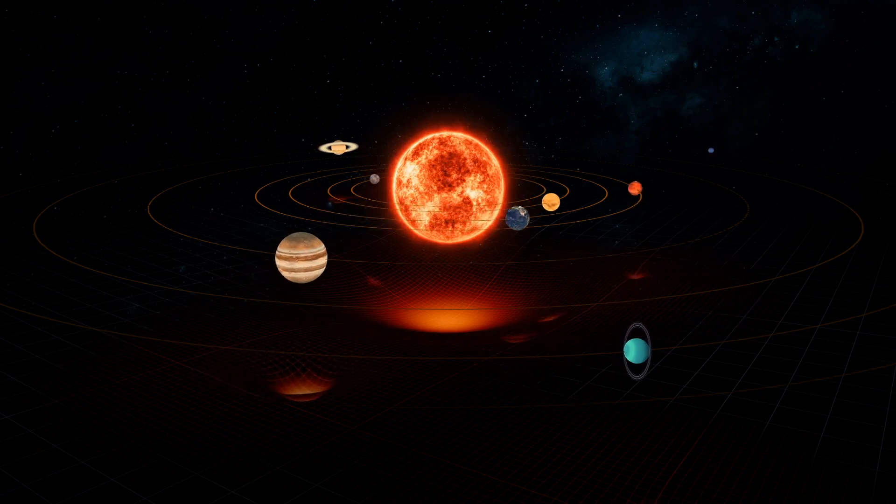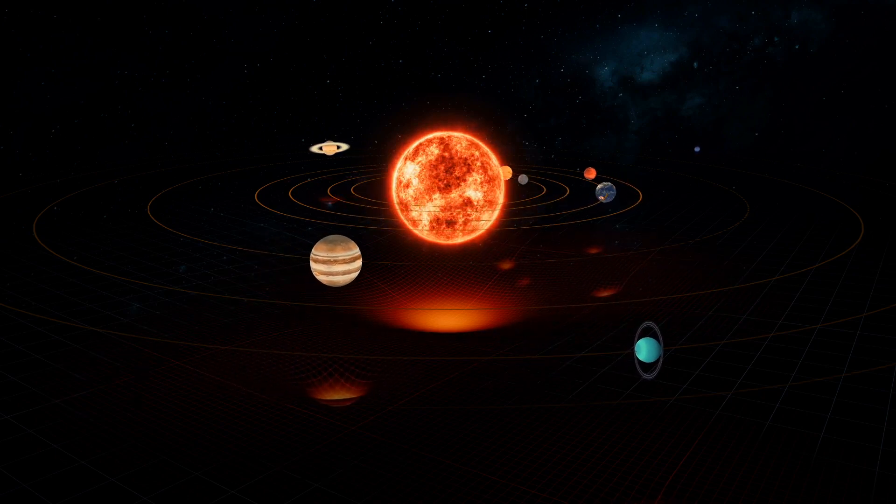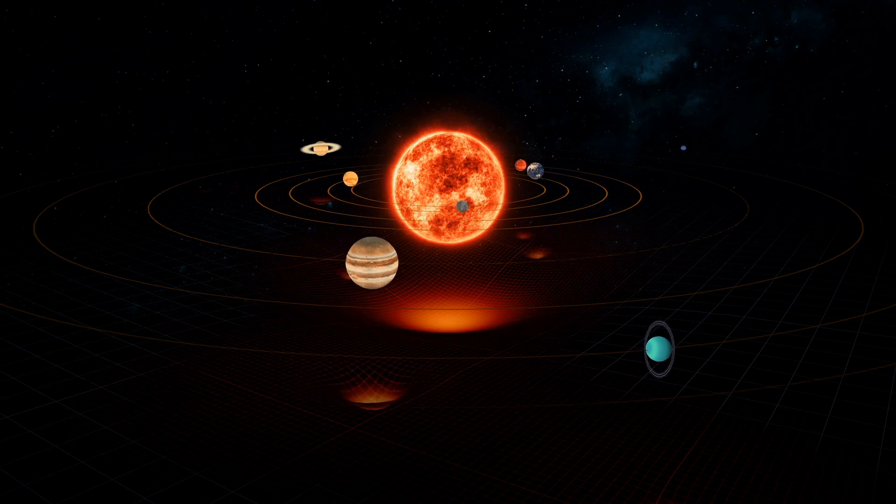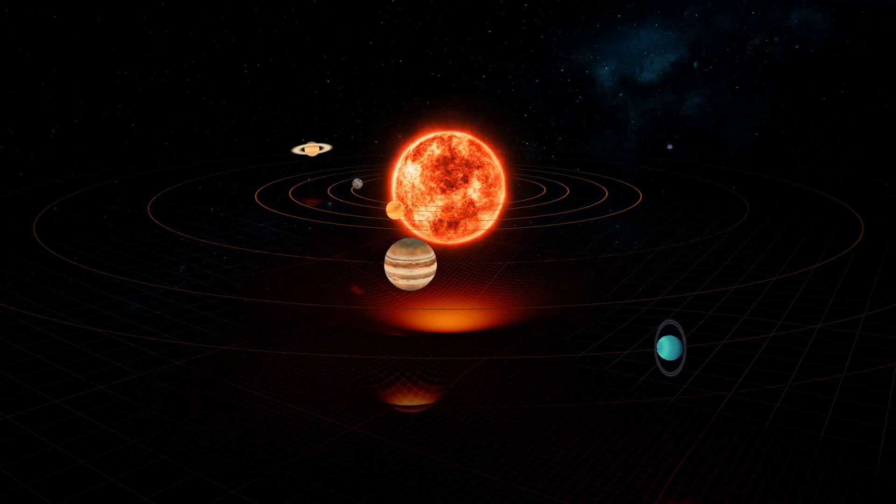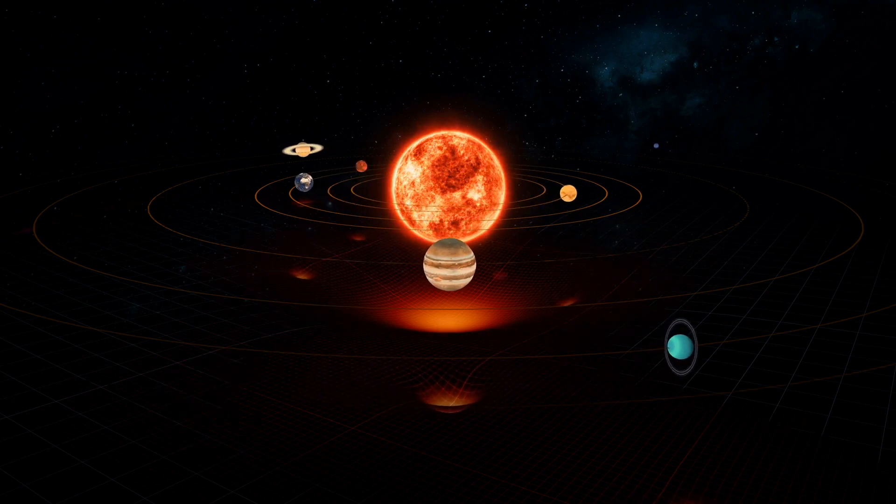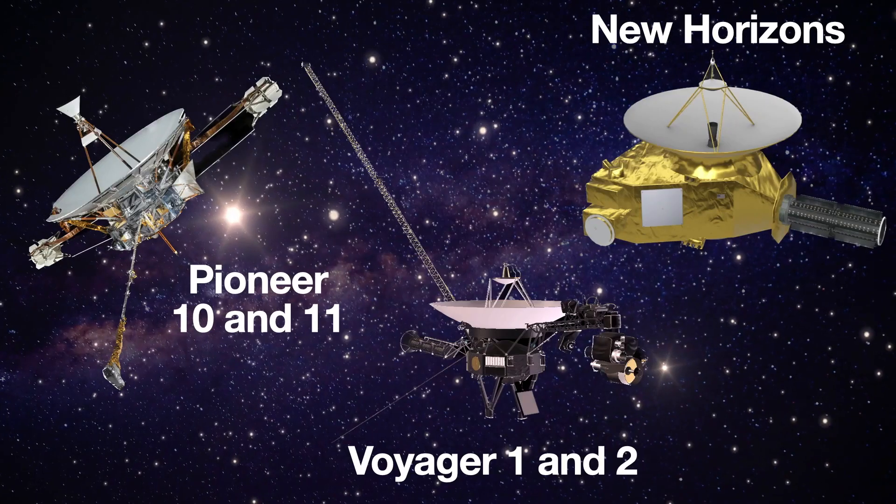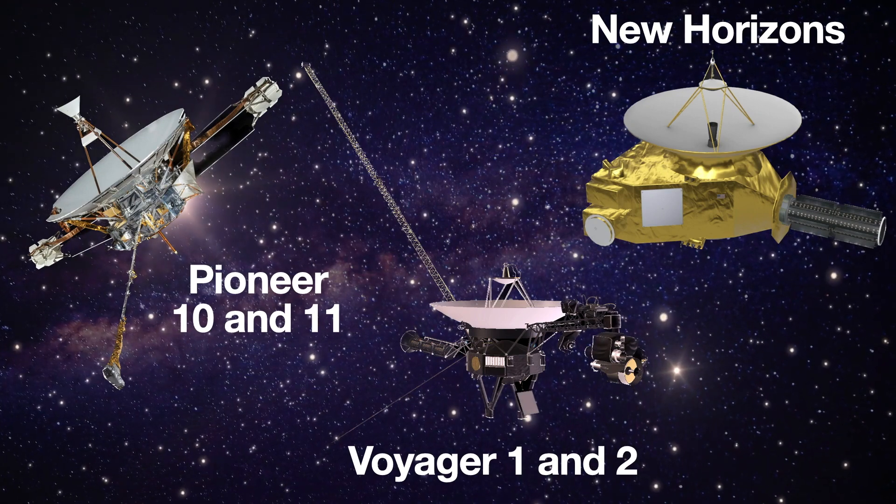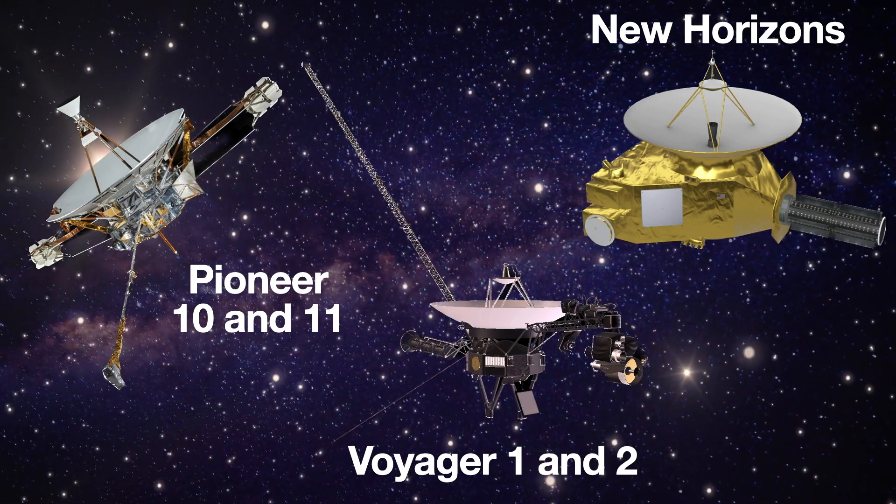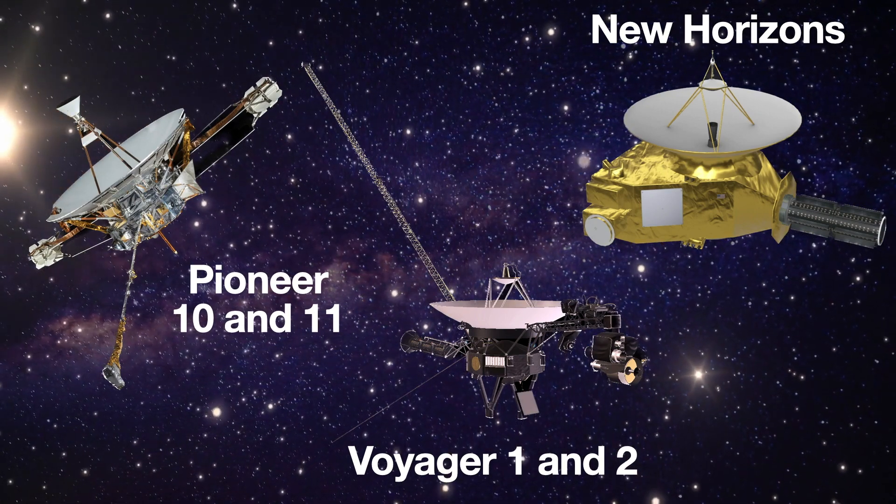They are the farthest man-made objects from Earth. Sent to explore the outer solar system, five spacecraft have visited planets, moons, and asteroids, and assisted by gravity are racing towards the stars. Pioneer 10 and 11, Voyager 1 and 2, and New Horizons are all spacecraft launched by NASA with an impressive feat of firsts.